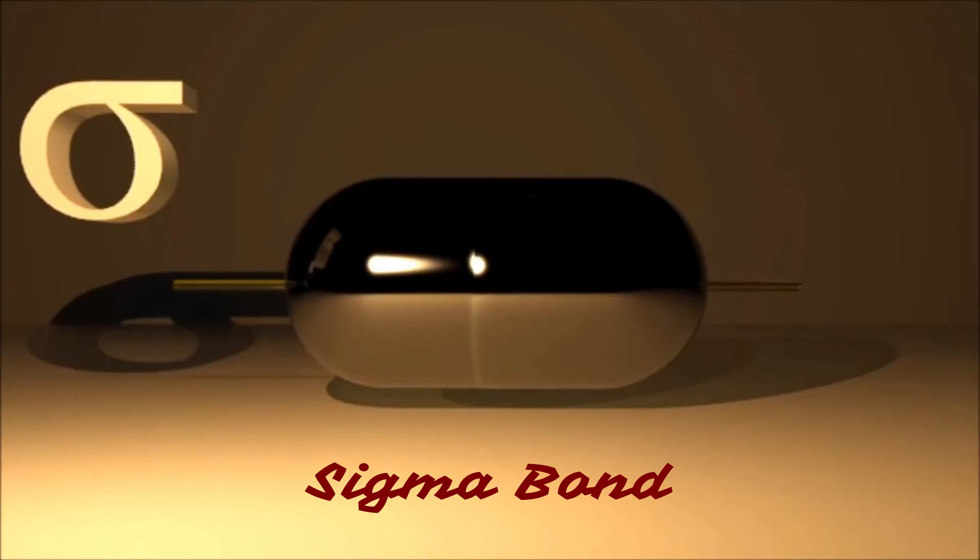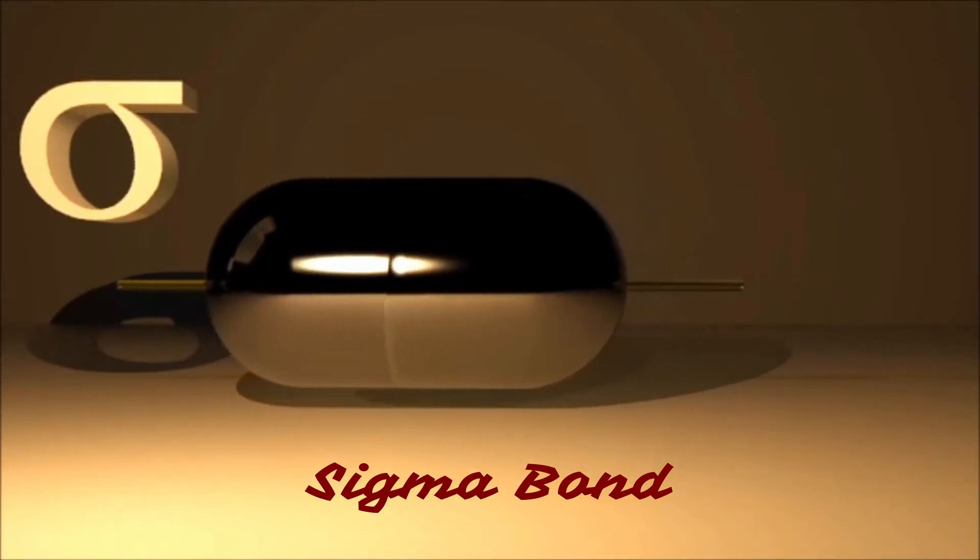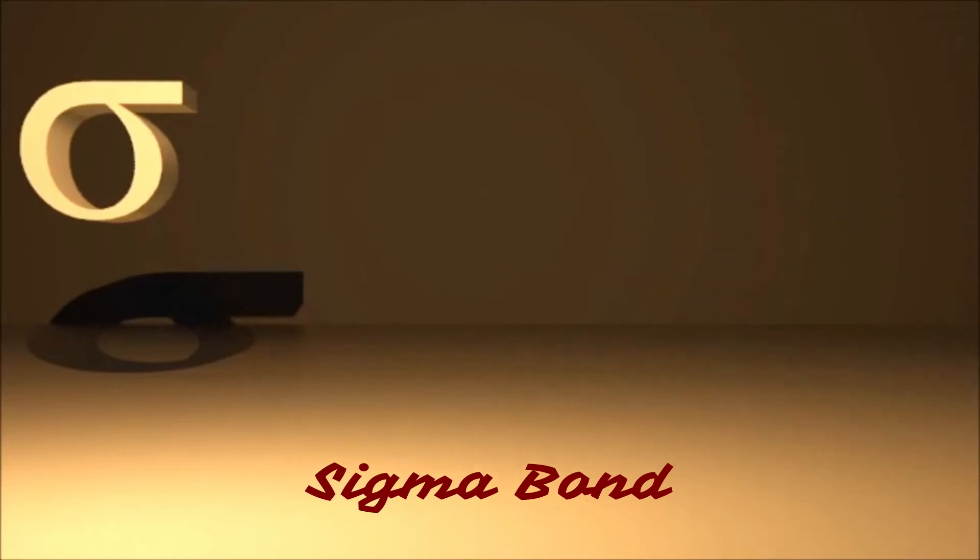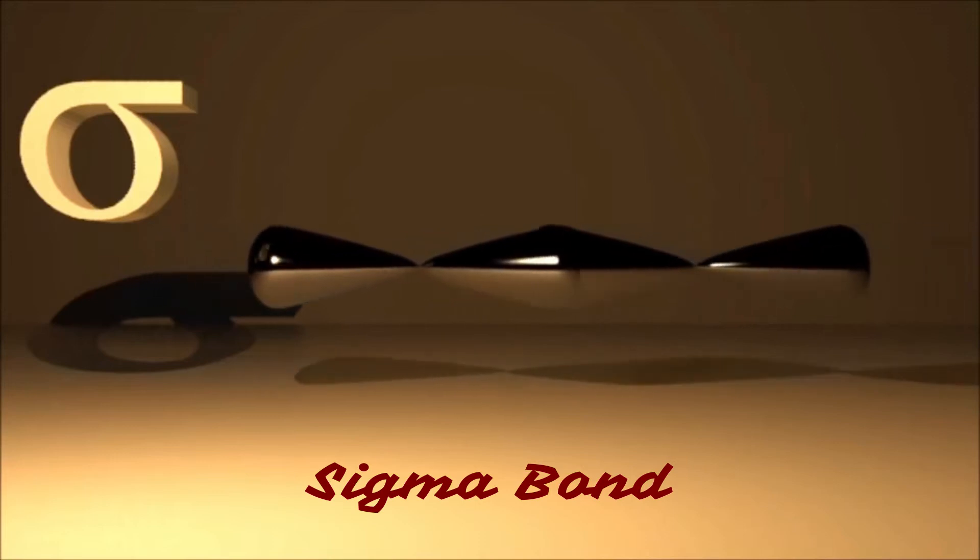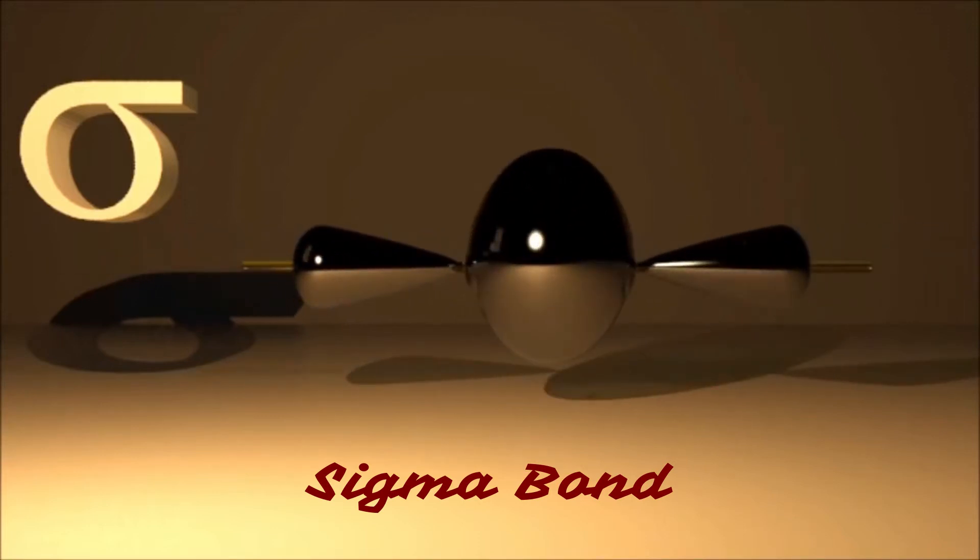All sigma bonds go along the internuclear axis. If you imagine a line that joins both nuclei, that's the direction the sigma bond will take. And if you have two fluorine atoms, when their p orbitals overlap just like this, that also forms a sigma bond, which is a single covalent bond.